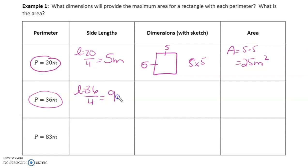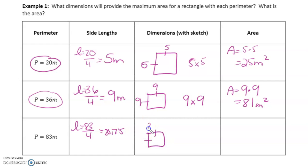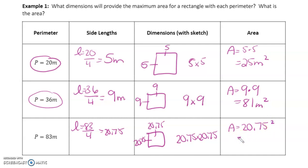For a perimeter of 36, we divide 36 by 4 to get 9 meters, giving a 9 by 9 square with an area of 9 × 9 = 81 meters squared. For a perimeter of 83 — included to practice decimals — 83 ÷ 4 = 20.75, so the dimensions are 20.75 by 20.75, and the area is 20.75² = 430.5625 meters squared.